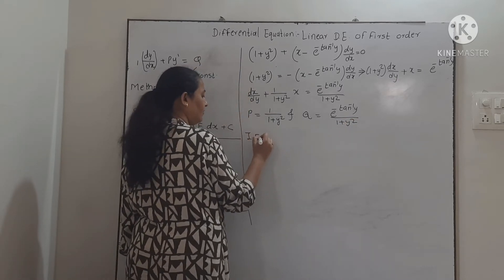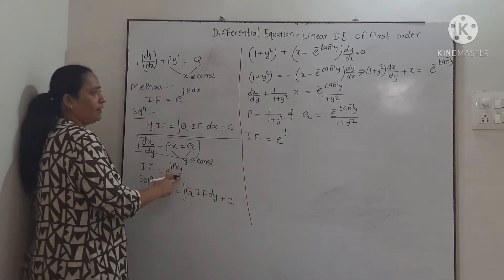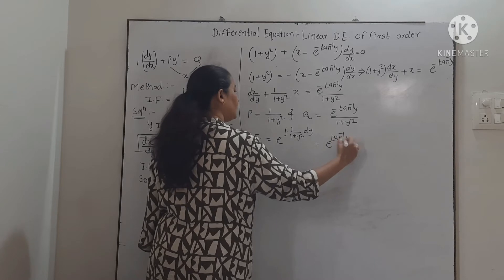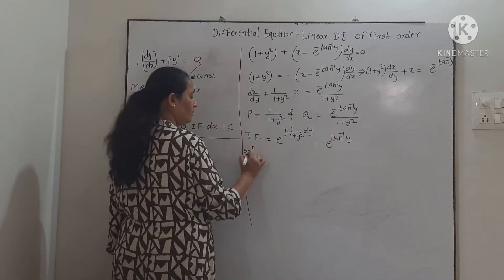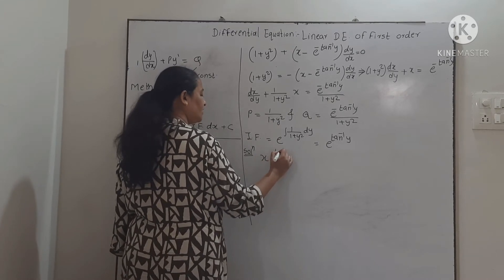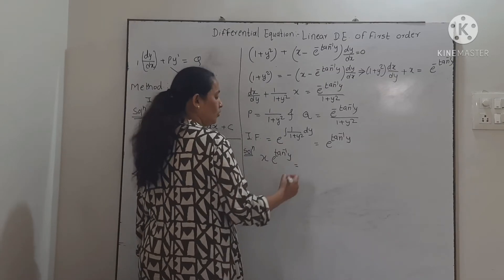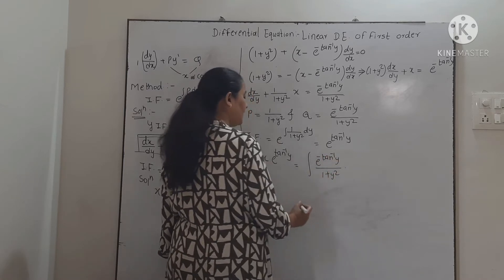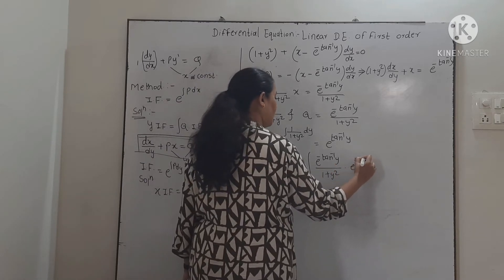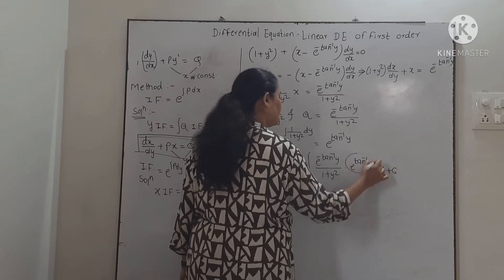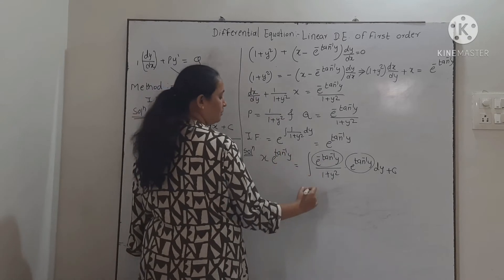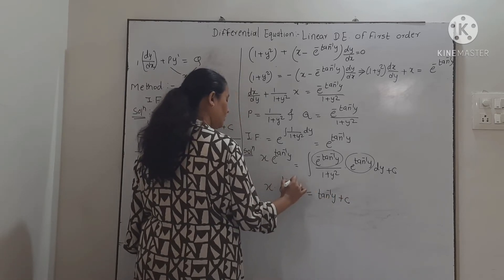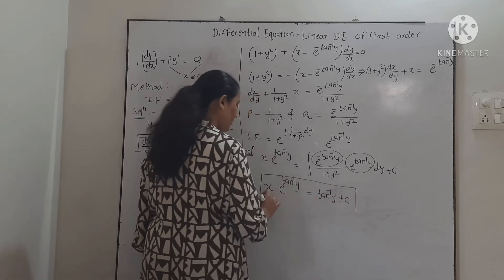The integrating factor is e^(∫P dy) = e^(∫1/(1+y²) dy) = e^(tan⁻¹y). Since this is linear in x, the solution is x · e^(tan⁻¹y) = ∫[e^(−tan⁻¹y)/(1 + y²)] · e^(tan⁻¹y) dy + c. The two exponential factors cancel, and the integral of 1/(1 + y²) is tan⁻¹y. So the solution is x · e^(tan⁻¹y) = tan⁻¹y + c.